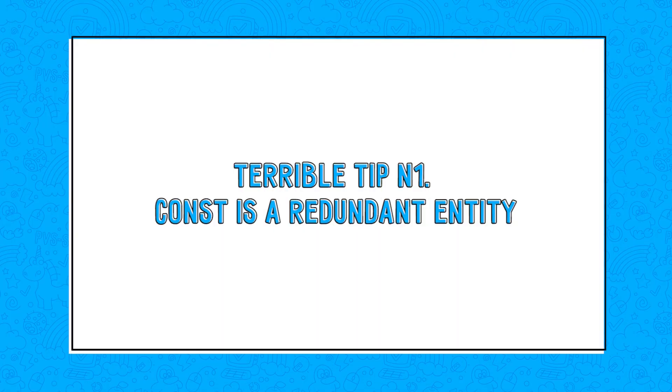The const keyword just takes up space in code. If you don't want to change a variable, then just leave it like that. But the problem is human factor is always around the corner. Const helps avoid errors related to an accidental change in the variable value. It's especially helpful when you work with large projects or in a big team where everyone can change the code. When we see const before the variable, we immediately know that the value won't change. Moreover, const increases readability and makes code more understandable for other developers.